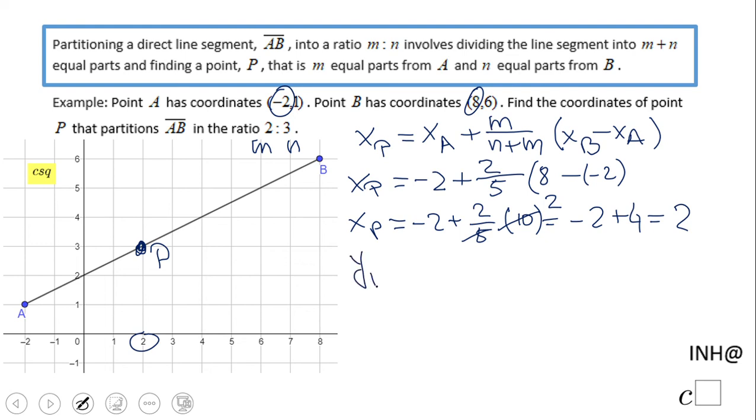Same, we're going to do Y sub P, the y-coordinate of the point P, the partitioning point. That will be YA plus M over M plus N, and we have here YB minus YA. So what do we get here? We get 1 plus 2 over 5, and we get here 6 minus 1.